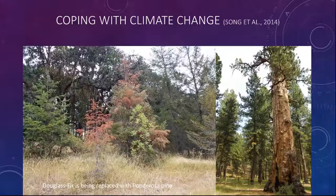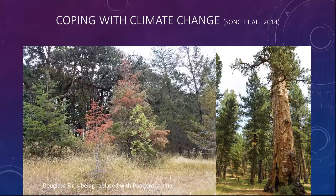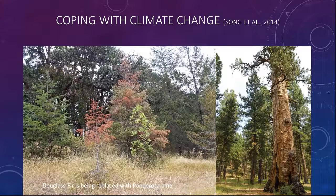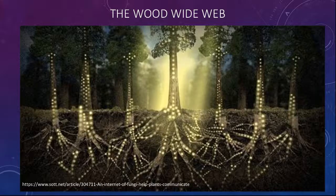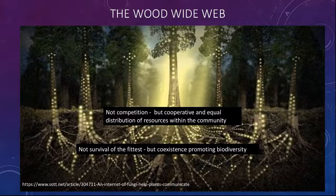The same happens with climate change as species become intolerant of heat in northern hemispheres. Other species that are more tolerant of heat are introduced into the ecosystem. The existing primary trees that are dying pass on their nutrients — including carbon — to these newcomers, ensuring the survival of the forest. The wood wide web is not competition but cooperative and equal distribution of resources within the community. It is not survival of the fittest but co-existence promoting biodiversity.